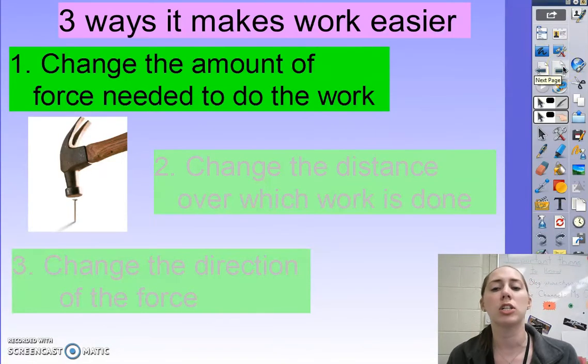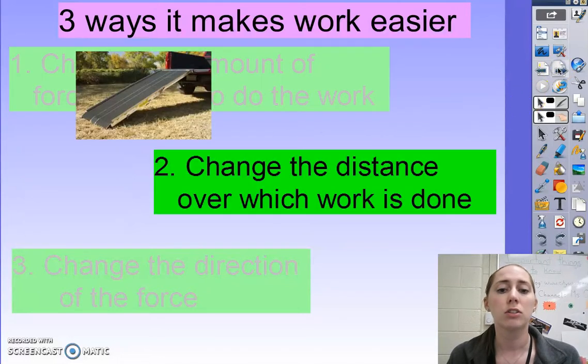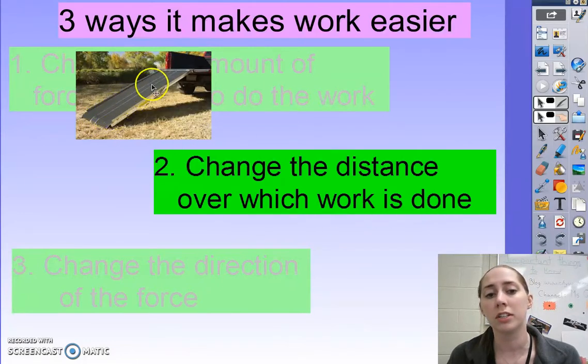So let's talk about how machines make work easier. There's three things that they can do. One is they can change the amount of force needed to do the work. Two, they can change the distance over which work is done. Here, it takes a longer distance to get up than it would just to lift it straight up.